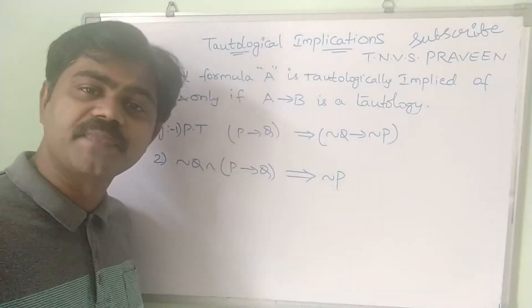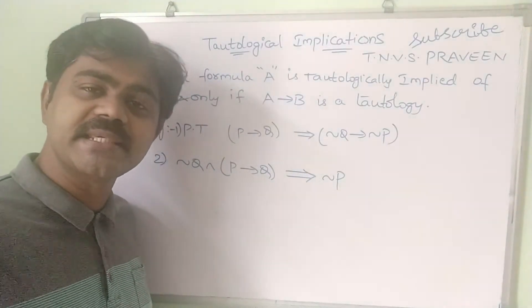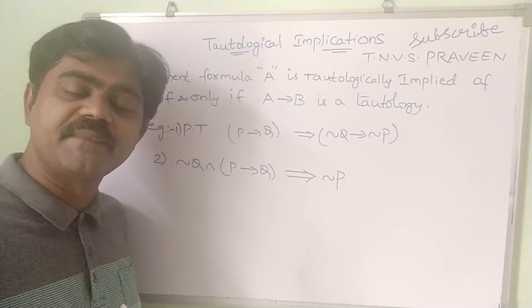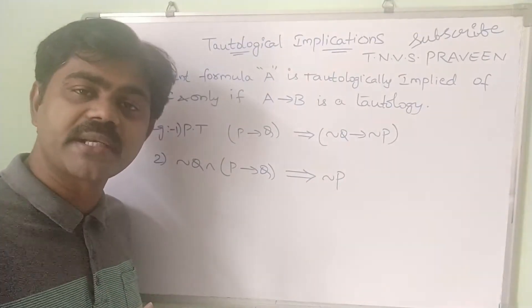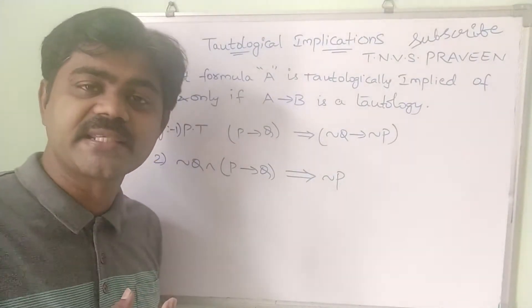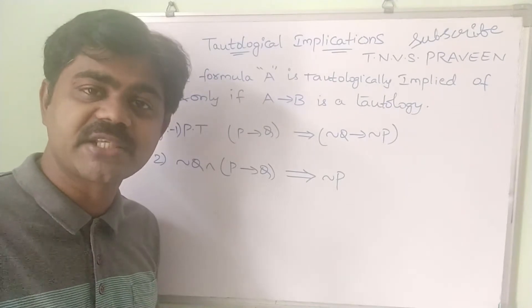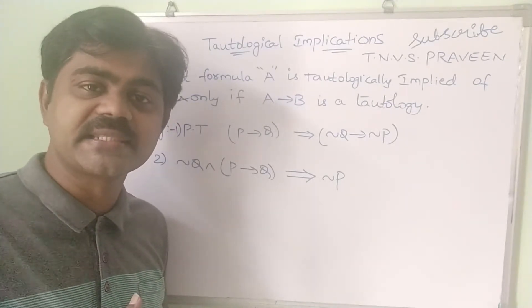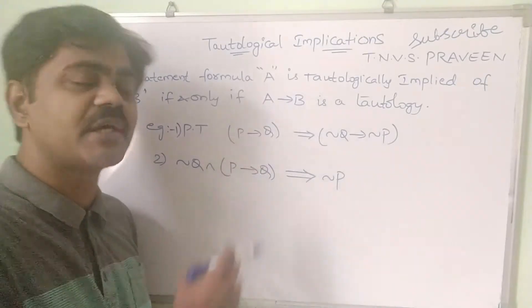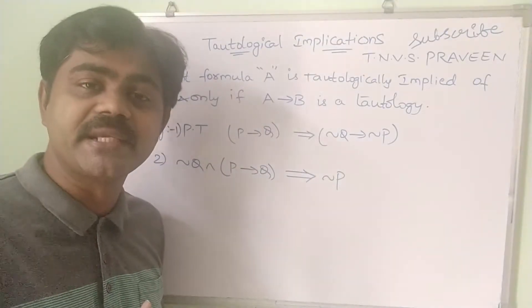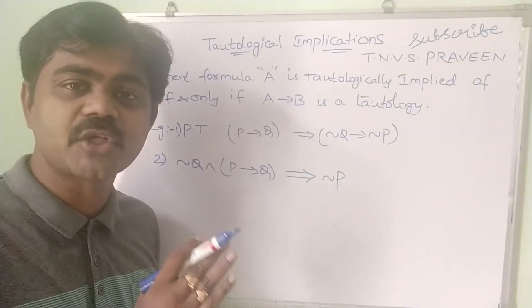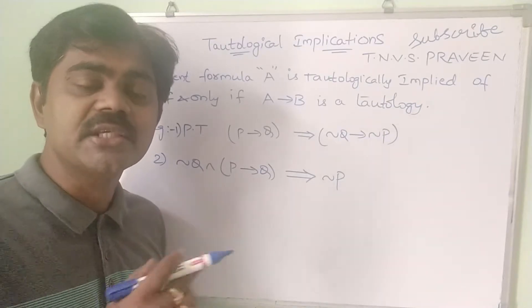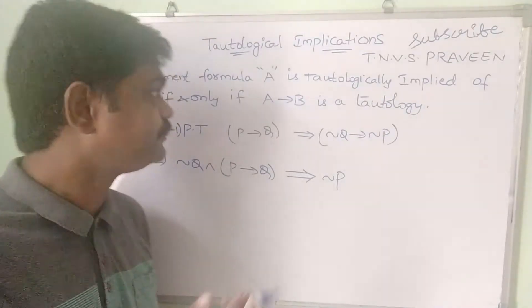What is tautology? Tautology is when everything results in true. What is contradiction? If everything results in false, it's a contradiction. So for tautological implication, we need to show how LHS is tautologically implied to RHS. Let's see the definition.